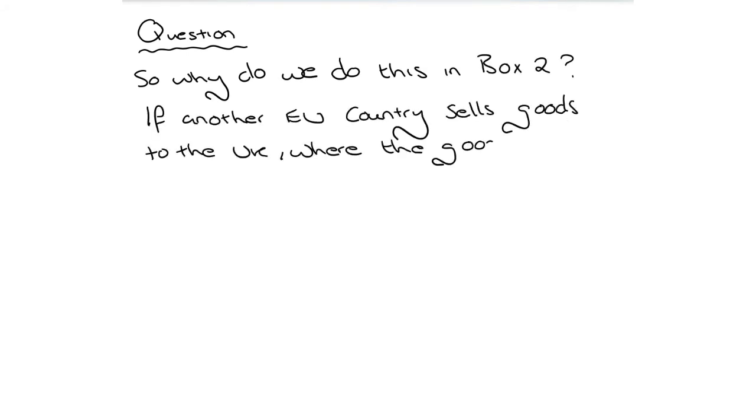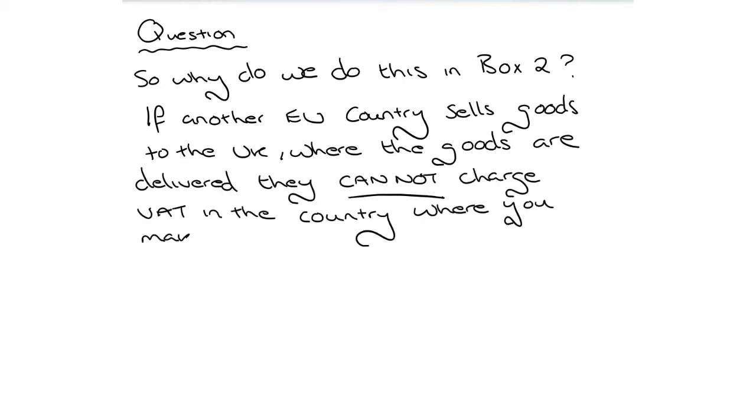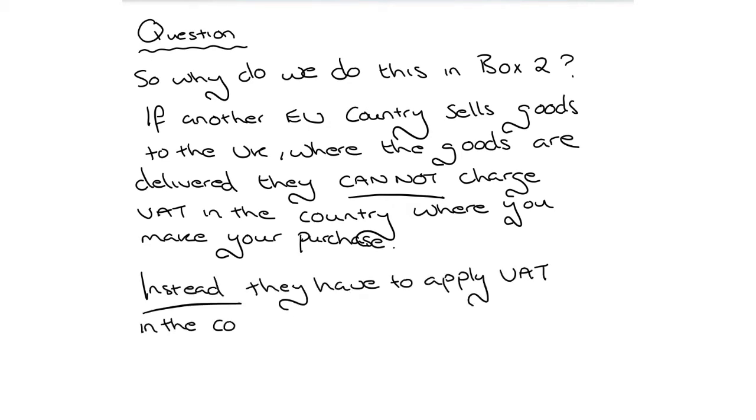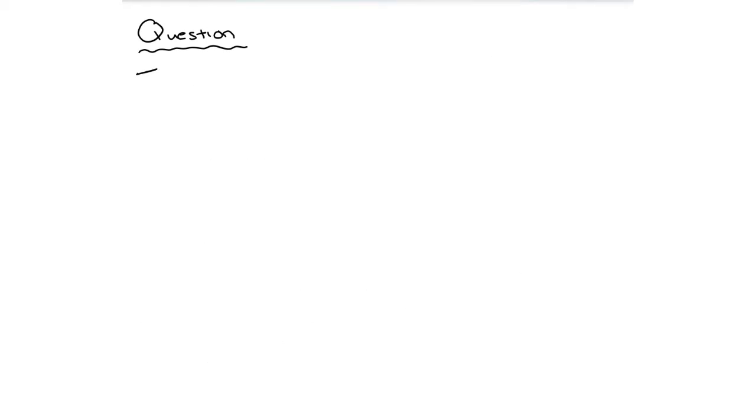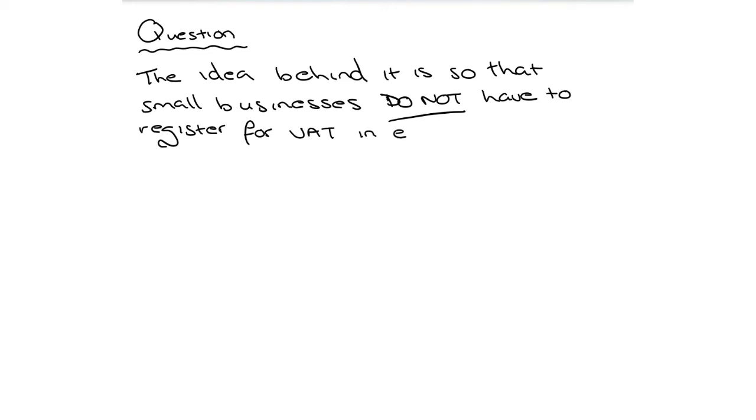So why do we do this in box 2? So if another EU country sells goods to the UK where the goods are delivered, they cannot charge VAT in the country where you make your purchase. Instead, they have to apply VAT in the country where the goods are delivered. So that's a rule that HMRC has created. And in fairness, there is a little bit of logic behind it.